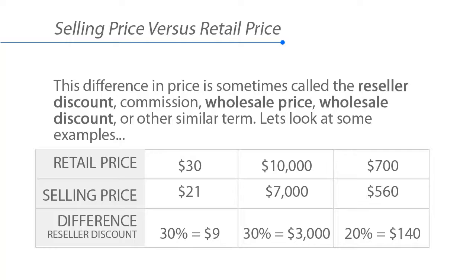If the retail price is $700 and we sell it to the reseller or distributor for $560, that's a reseller discount of 20%, or $140 for each product.